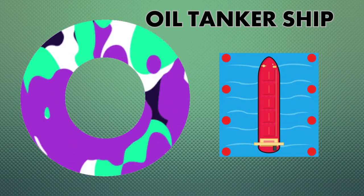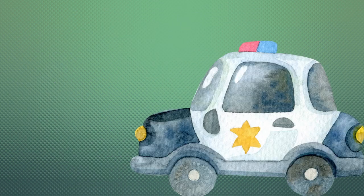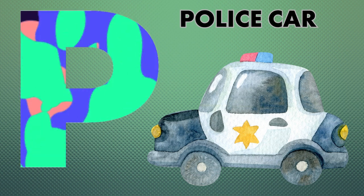O is for oil tanker ship, oil tanker ship. P is for police car, police car.